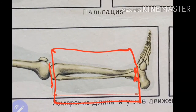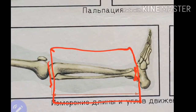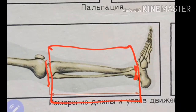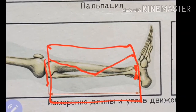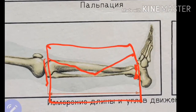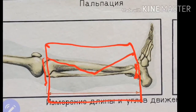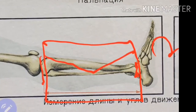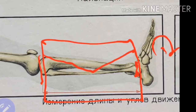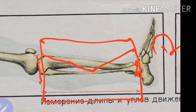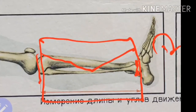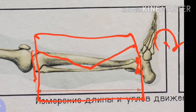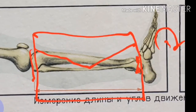If the length is changed, or you see some angulation at the fracture site, or you see rotation when the foot is twisted, then you know that there is a deformity at the fracture site. This is the main clinical sign for a fracture which is displaced.